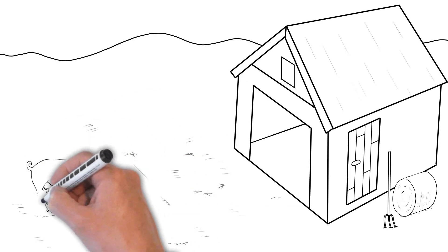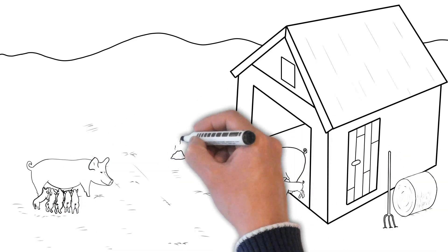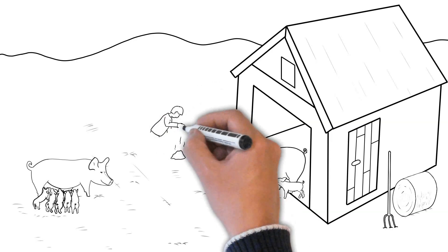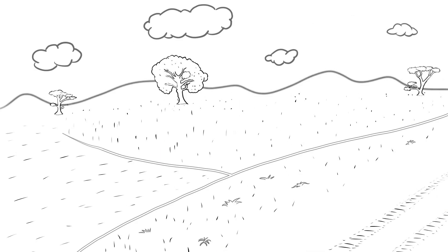Once upon a time pigs were kept in small numbers on straw bedding with access to fresh air. The manure was removed manually. So why do we no longer see pigs in the countryside?